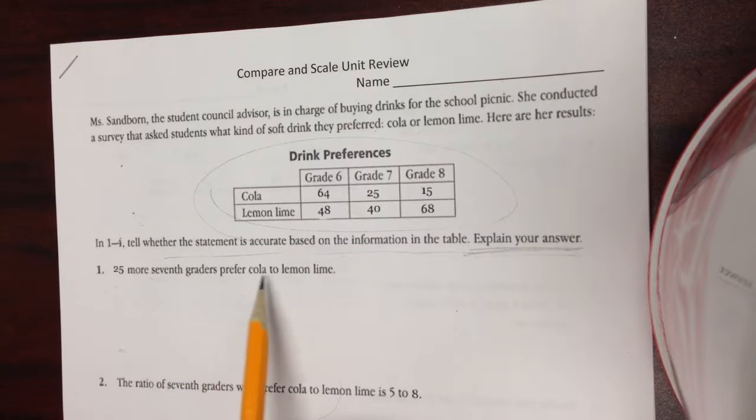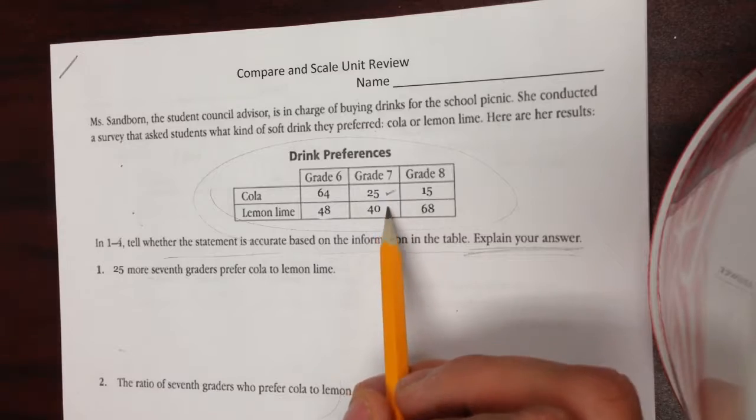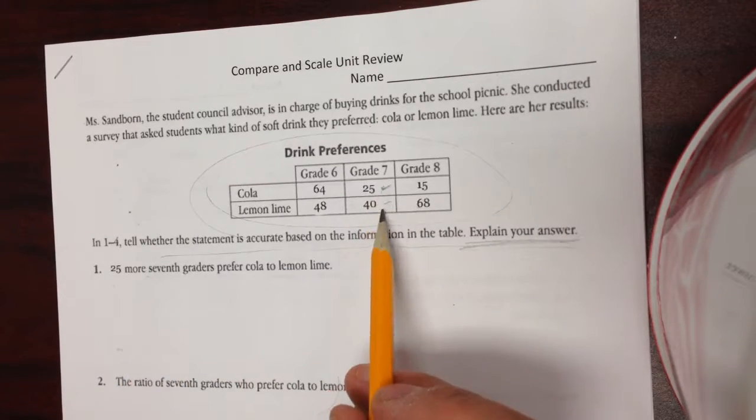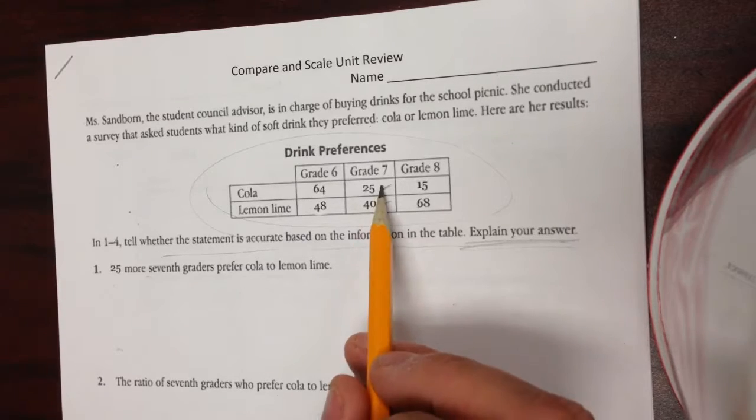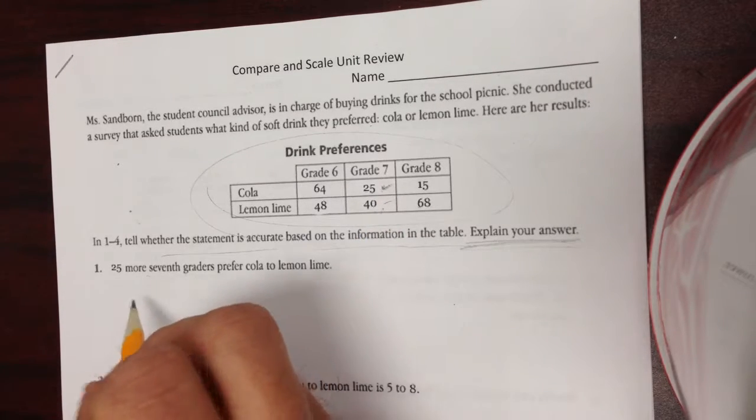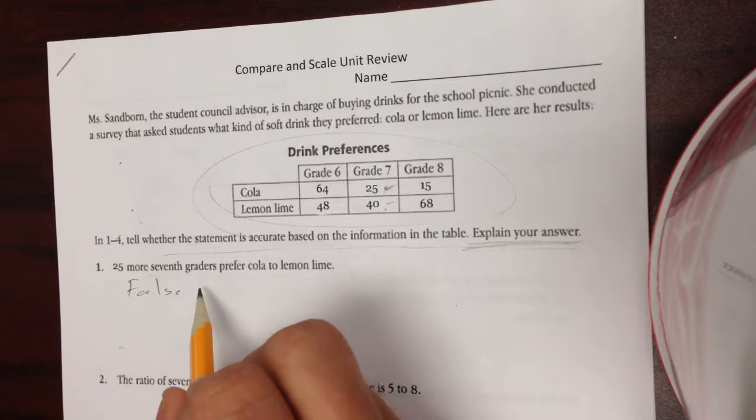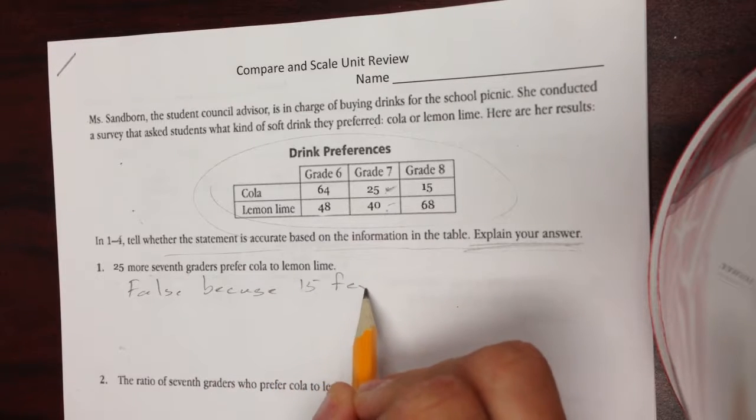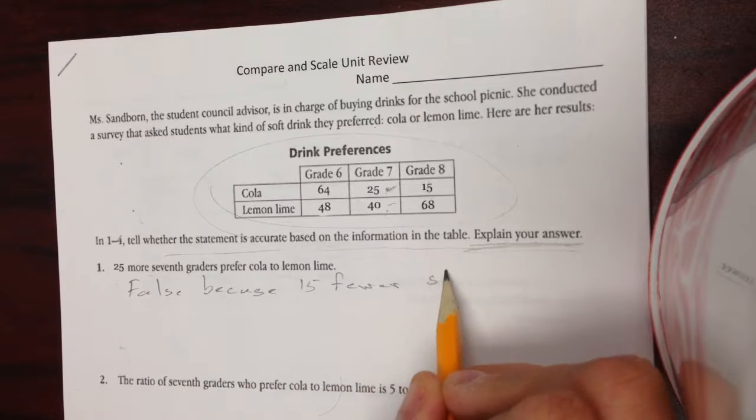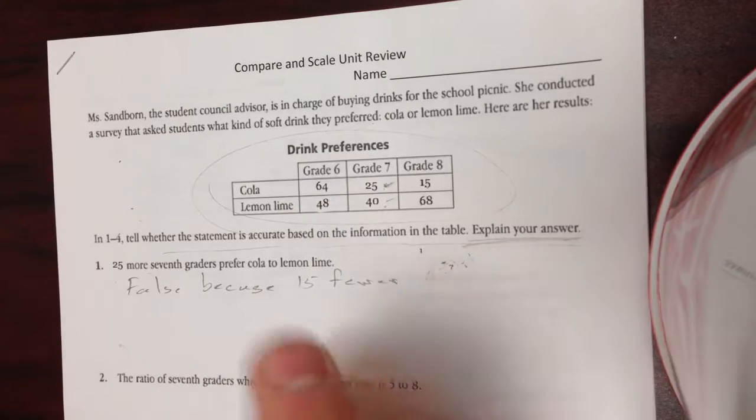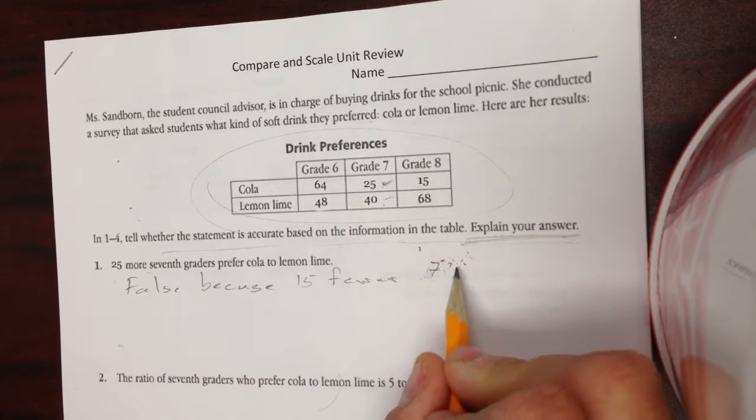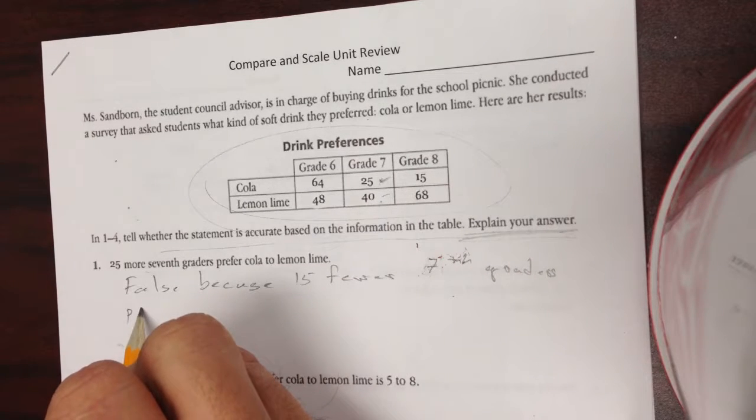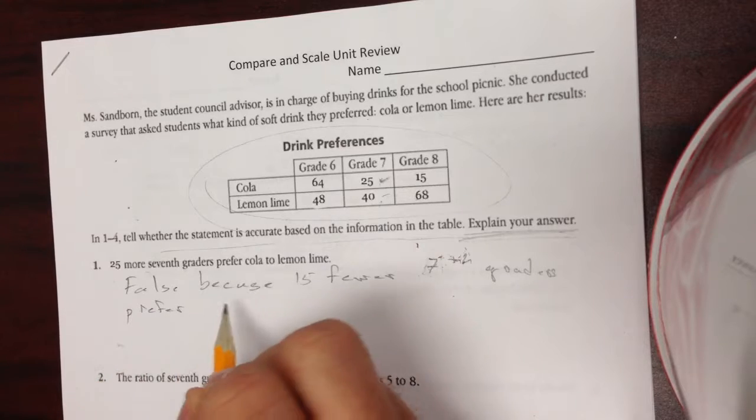So 25 more 7th graders prefer cola than lemon lime. No. It's not 25 more. 25 students prefer lemon lime, but it's not more than, or 25 students prefer cola, but it's not more than lemon lime. So the statement is false because 15 fewer 7th graders prefer cola.